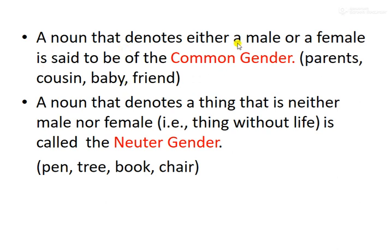A noun that denotes either a male or a female is said to be of the common gender. If it can refer to both male and female, we call it common gender. For example: parents, cousins — a cousin can be a boy or a girl.